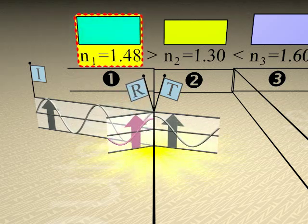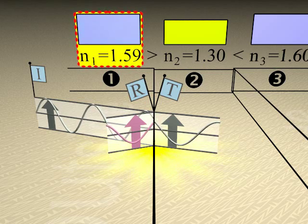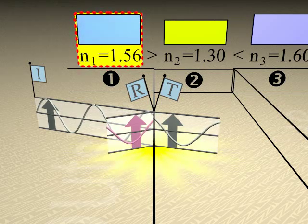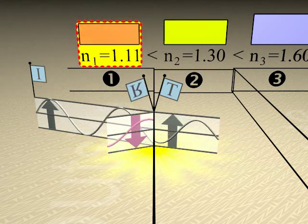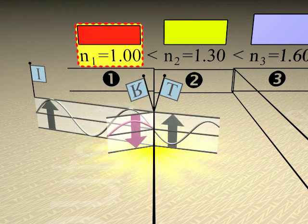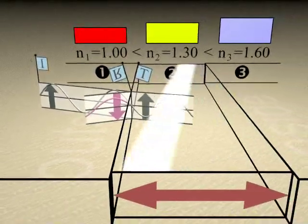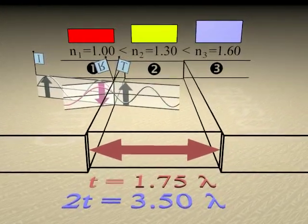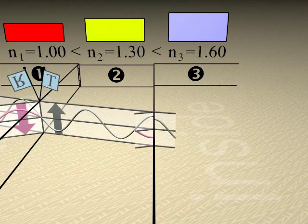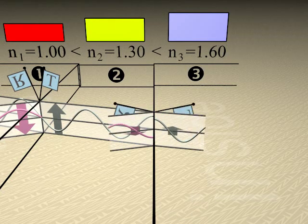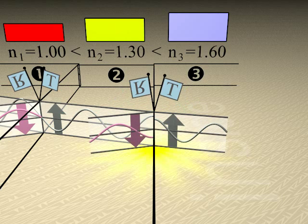If the reflected index had been lower, the reflected wave would have come away right side up. As the beam progresses through the thin film of the center medium, notice how the refracted wavelength of the transmitted wave within the medium is compressed, since the larger index causes the average velocity of the wave to become slower.